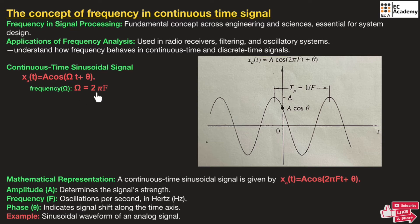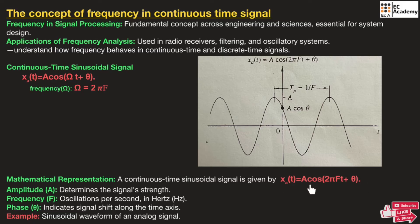Substituting ω = 2πF, we get XA(T) = A cos(2πFT + θ). This is the mathematical representation of the continuous time sinusoidal signal, where A is the amplitude that determines signal strength, F is the frequency representing oscillations per second in hertz, and θ is the phase indicating signal shift along the time axis.